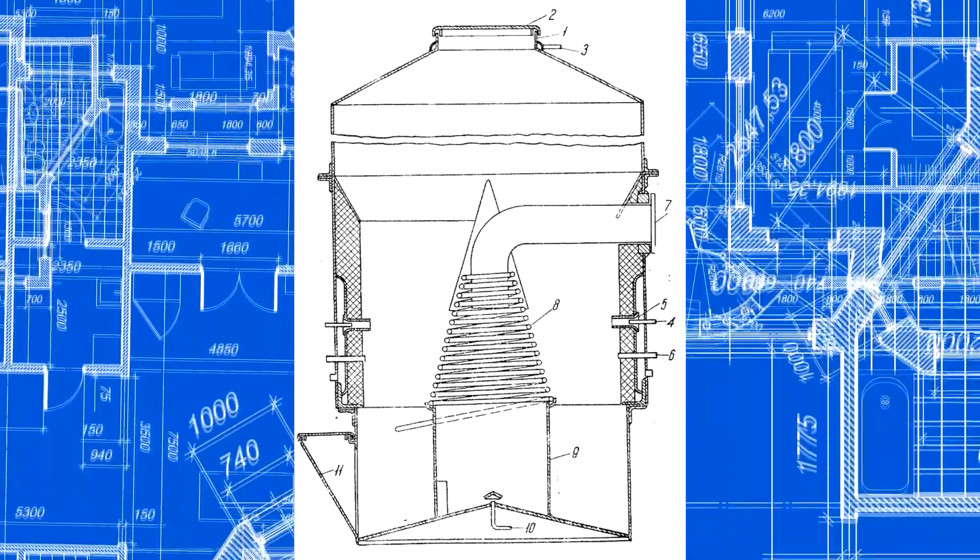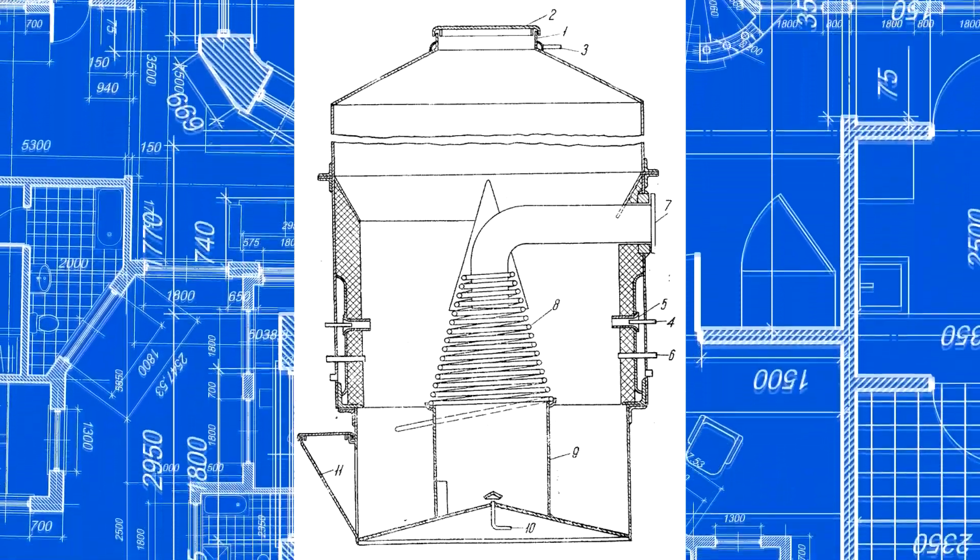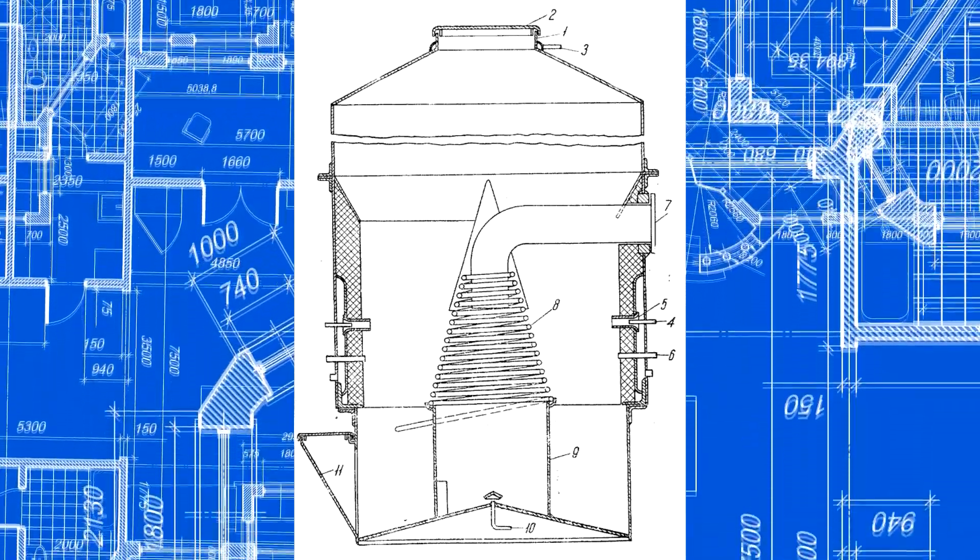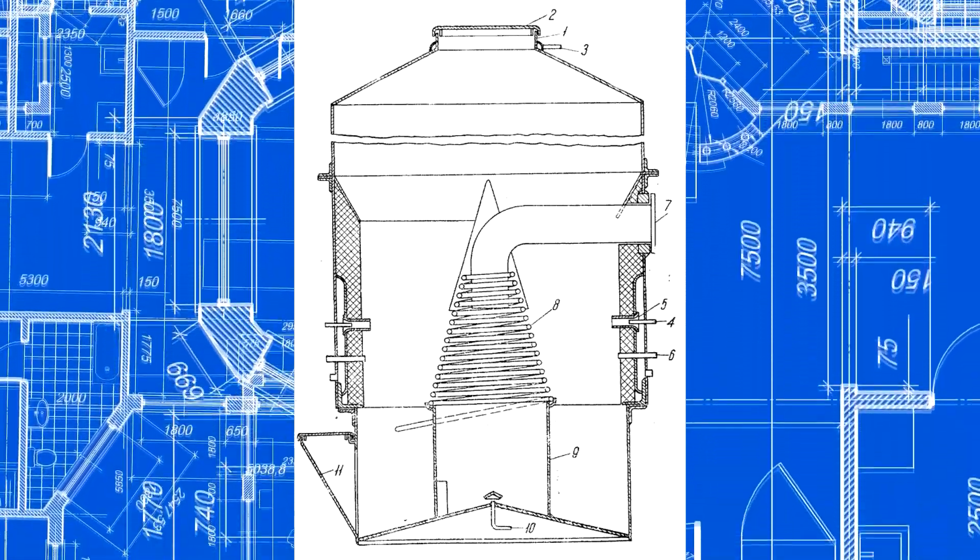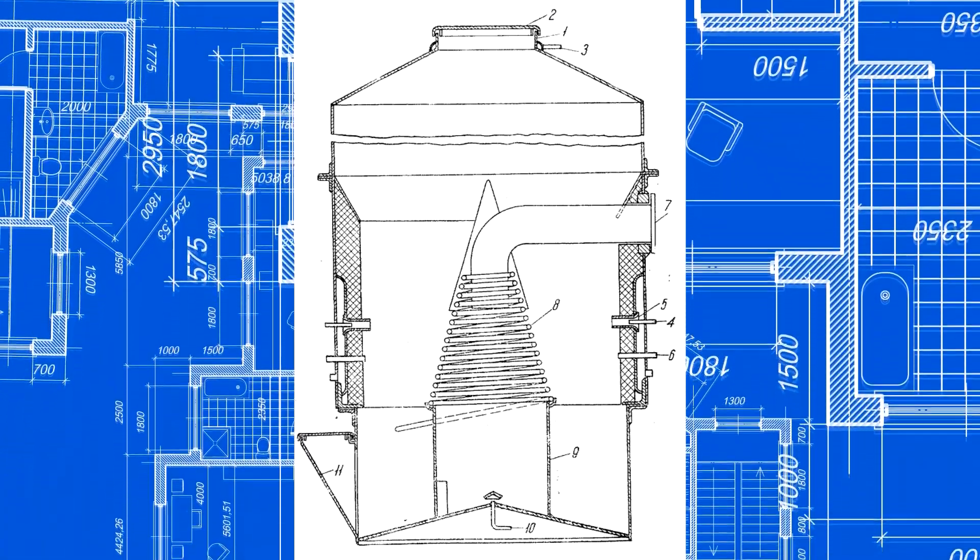Thus, the steam ejection reduces the tuyere resistance. The gas output pipe is marked with the number 7. The ash and slag are discharged in the spot marked with the number 11. Water is supplied to spiral 8 from the bottom and comes out from the top as steam.